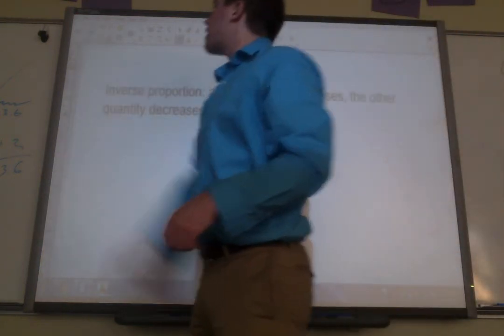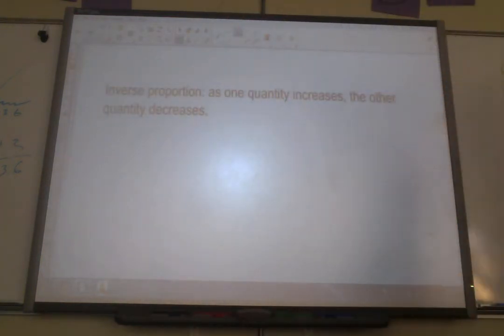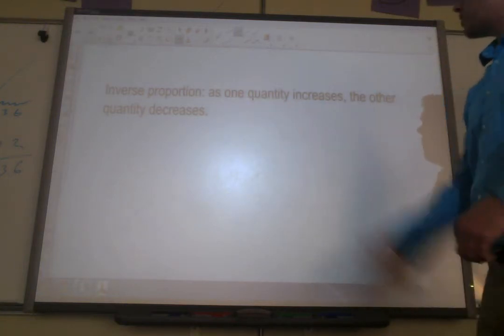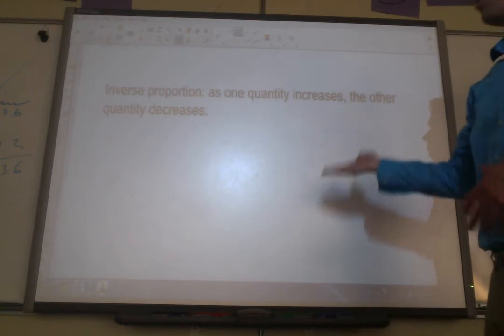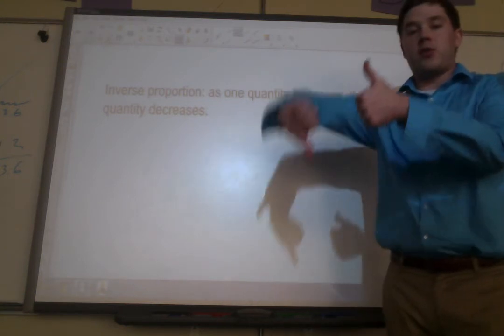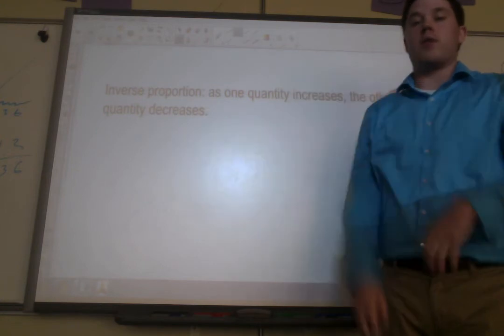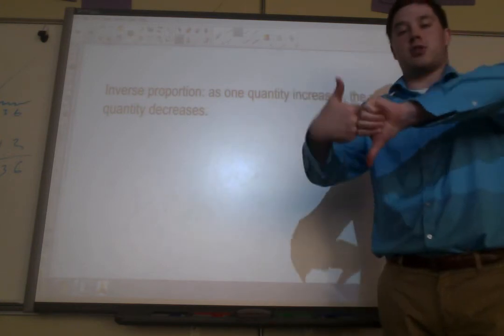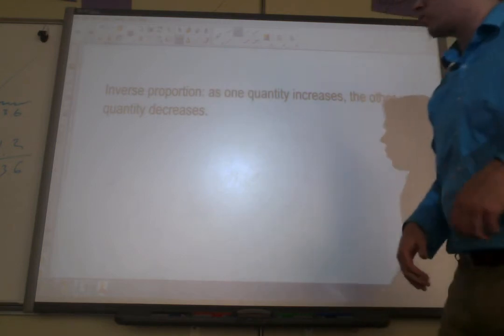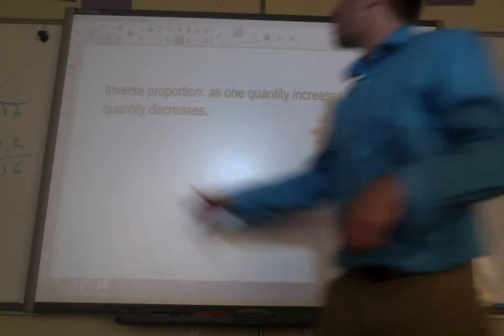Okay, well, an indirect proportion is just the opposite, or an inverse proportion. You can say either one. Okay, as one quantity, one number, as one number increases, the other one is going to decrease. So this time, if one thing goes up, the other one is going to have to go down. Or if the first one goes down, the second number is going to have to go up. That is how an inverse or indirect proportion works. So let's go ahead and look at an example of that.